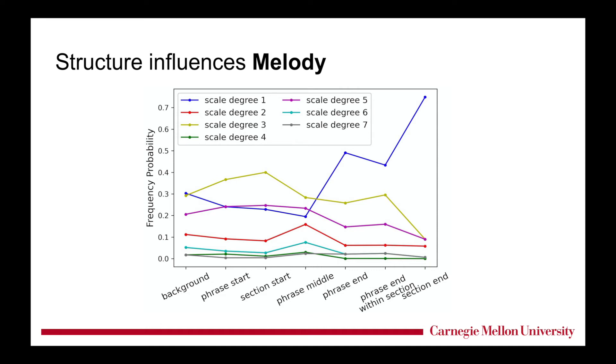And if we only have one level of structure, there shouldn't be difference between phrase and section locations. For example, we can see that scale degree 1 in melody, the blue line, tends to occur at the end of sections, but not at the start or middle of phrases.